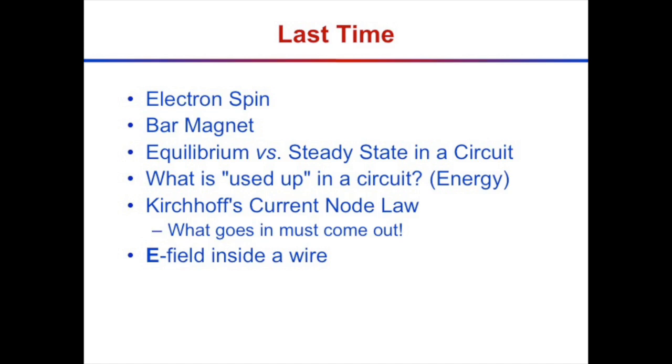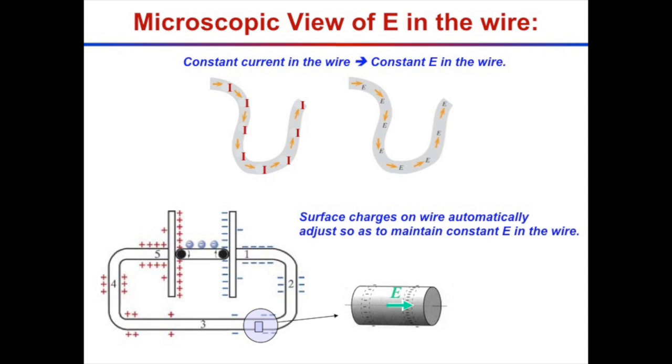We also looked at the electric field inside of a wire. If we have a steady state situation — steady state means constant current — then all along that wire, what goes in must come out. In order to drive that current, microscopically thinking, if we think of ourselves as an electron inside a solid, it would have to be a net electric field applied.